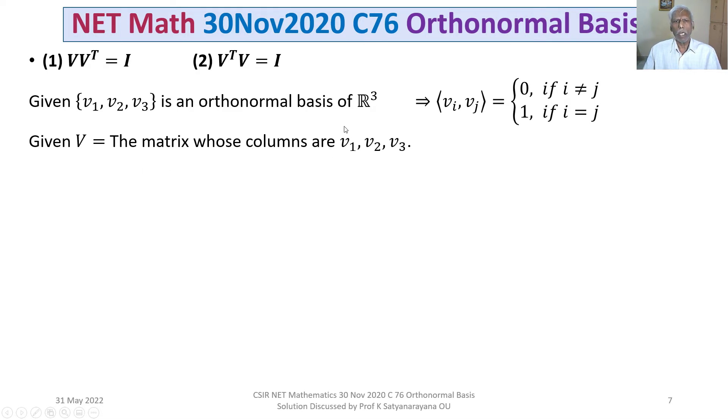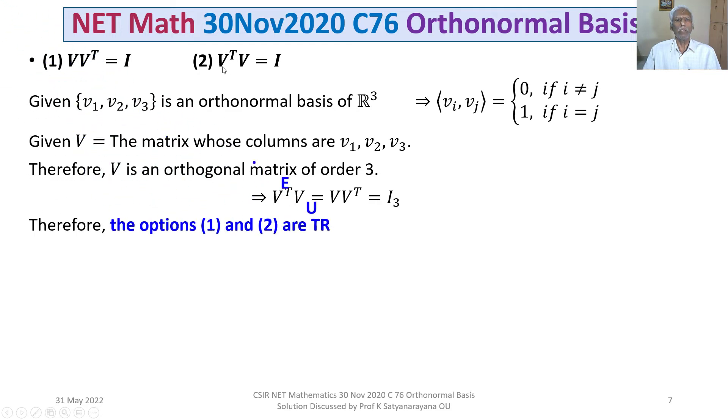Given V is the matrix whose columns are V₁, V₂, V₃, V is an orthogonal matrix of order 3. Therefore, VᵀV = VVᵀ = I₃. Therefore, the options given in 1 and 2 are true.